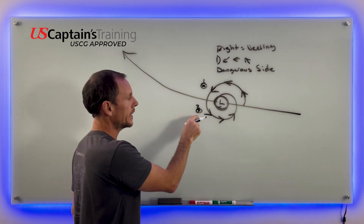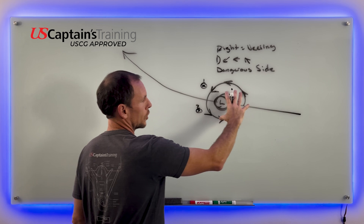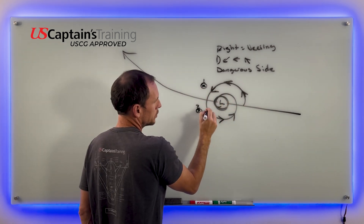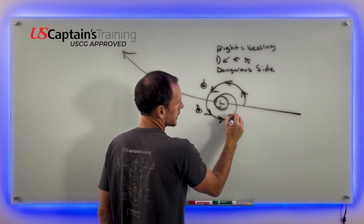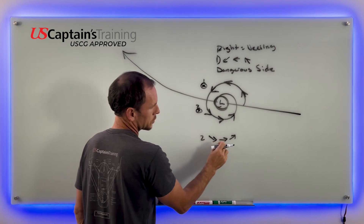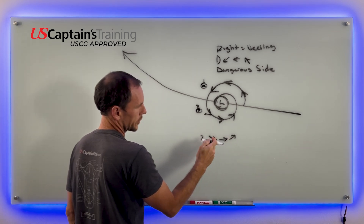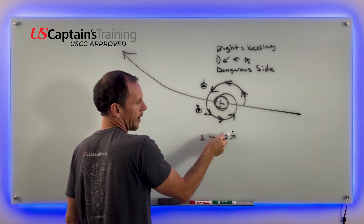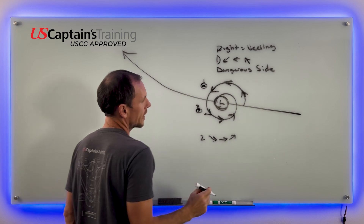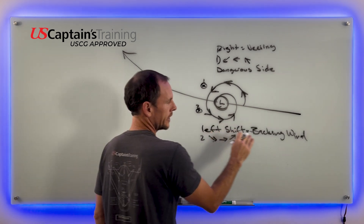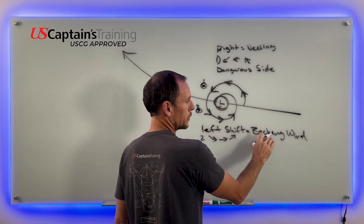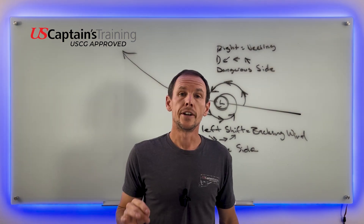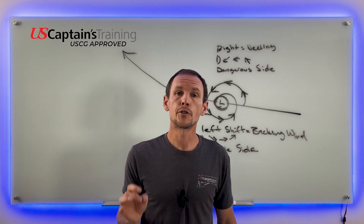In scenario two, you're located on the navigable side. As the low pressure moves past, you experience this wind, then this wind, then this wind — rotating left. A left shift equals backing wind, which means you're on the navigable side of the storm. Now we have a way of determining which side of the storm we're on.